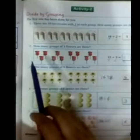Next. Question number 2. How many groups of 3 flowers are there? Each group must have 3 flowers. 1, 2, 3. Put on the circle.